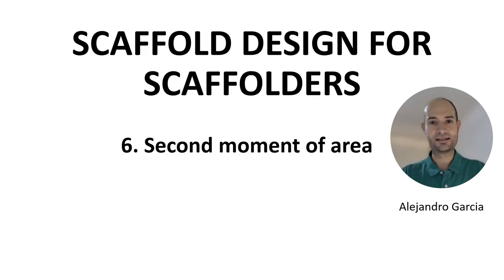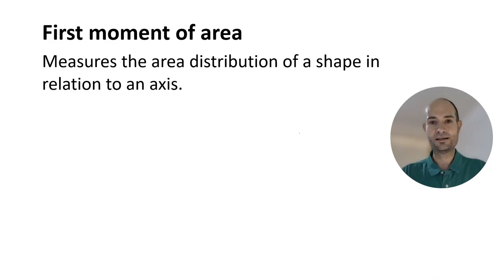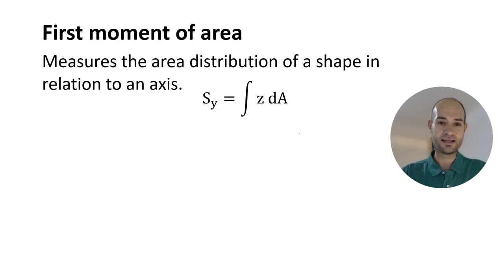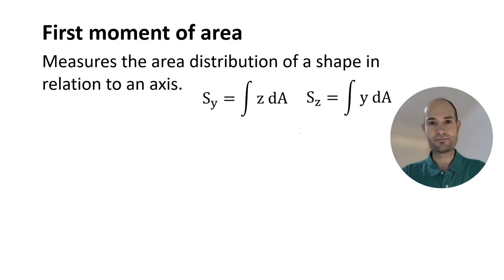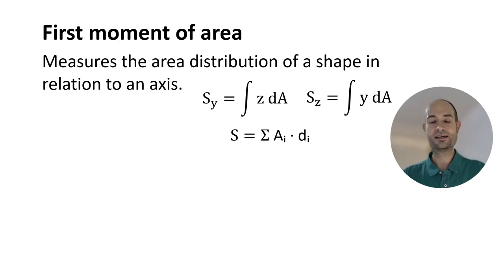But first I will explain the first moment of area. The first moment of area measures the area distribution around an axis of reference. In mathematics it's defined as an integral, depending on whether it's the y-axis or z-axis, but we are not going to get into integrals or advanced calculations. We are going to do the summation of areas times distance. A moment is a load times a distance, so in this case we have an area times a distance. That's it — first moment of area is area times distance.